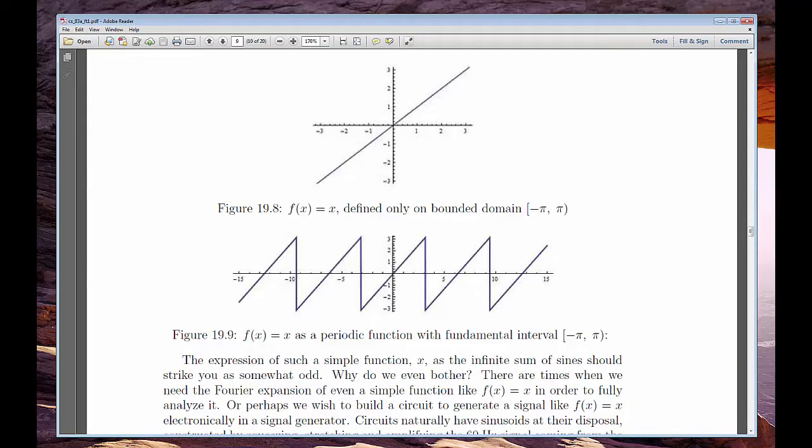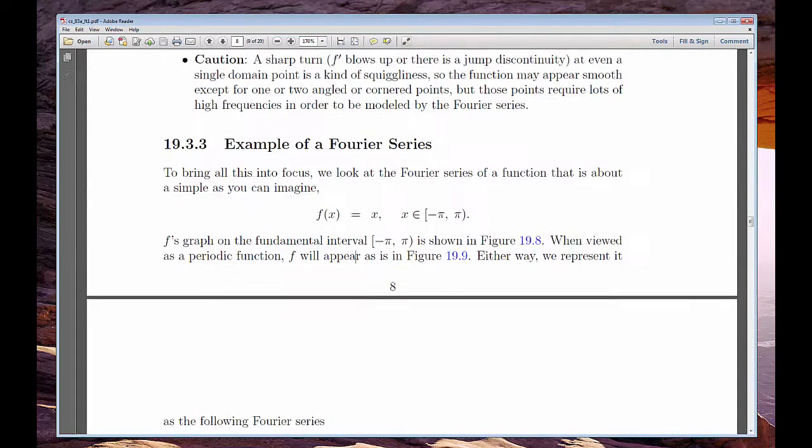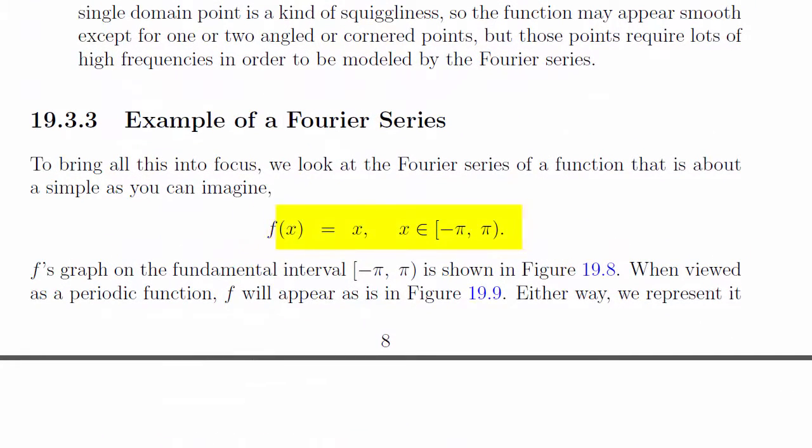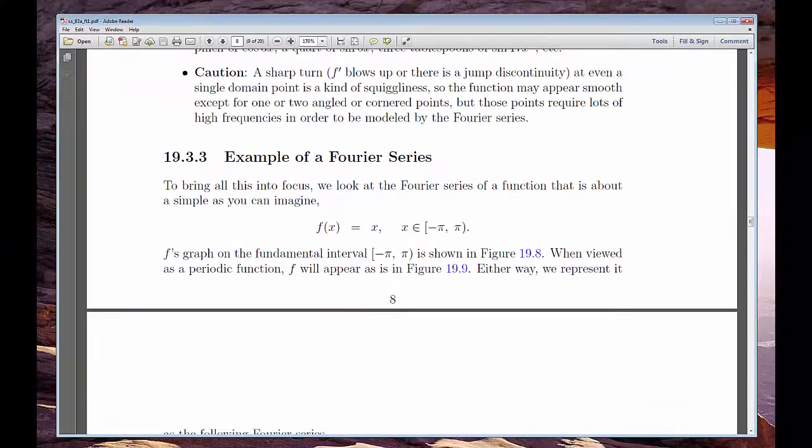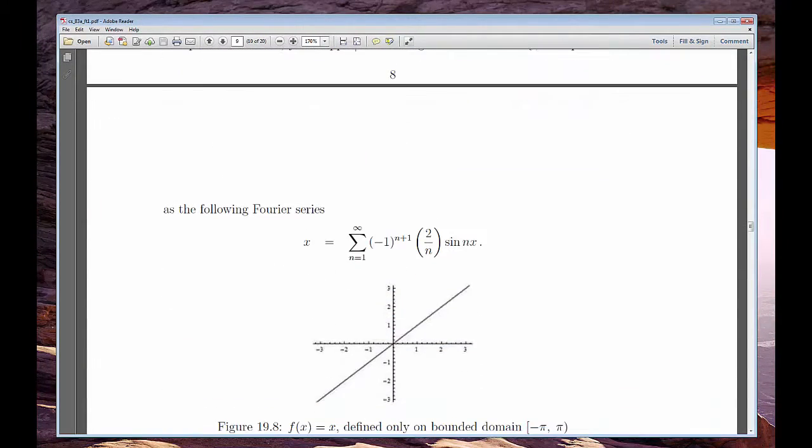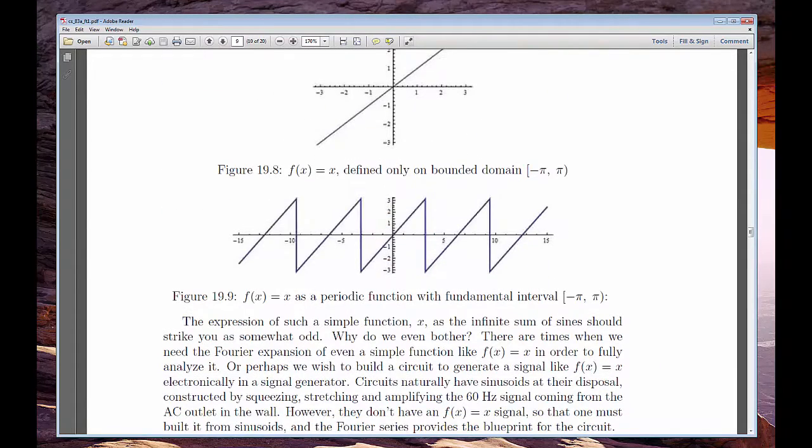If we do have a periodic function, though, we'll pick one domain interval, like minus one to one, or zero to two pi, to be its so-called fundamental interval over which it doesn't really look periodic. It's actually the replication of the function's behavior from this interval to all real numbers that gives the function periodicity.